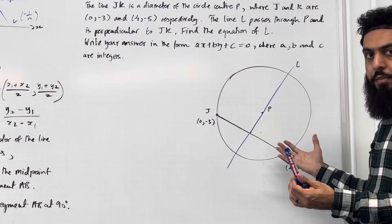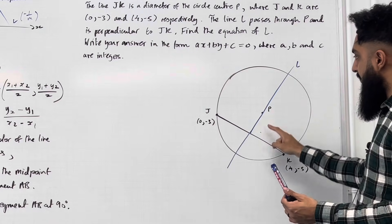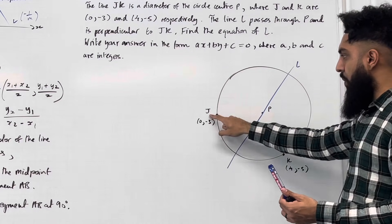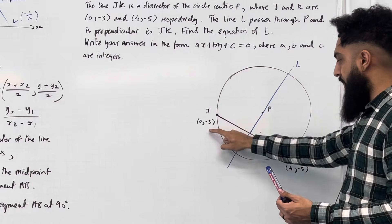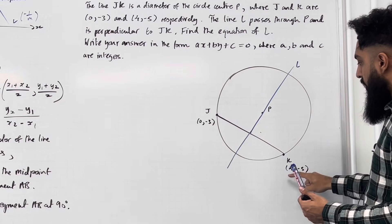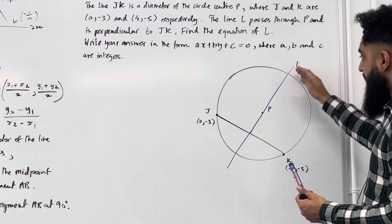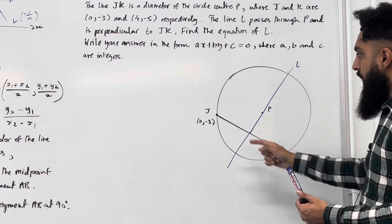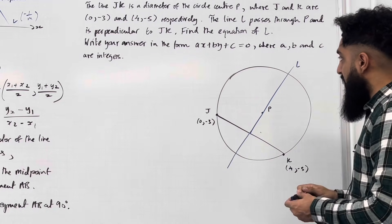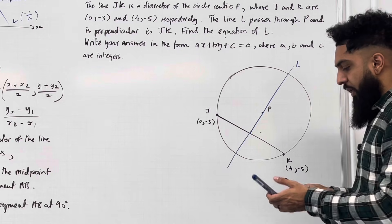We've got a circle, centre at P. J is the coordinate on the circle, 0, minus 3. K is the coordinate on the circle, 4, minus 5. L is the perpendicular bisector of the line JK. We want to find the equation of L.